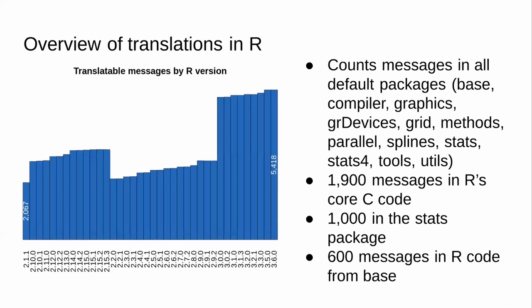In base alone there are about 2,500 messages — about 1,900 error messages and 600 from the R side. Stats has another 1,000 errors, like things you did wrong in running regressions. So it's quite a substantial message base.